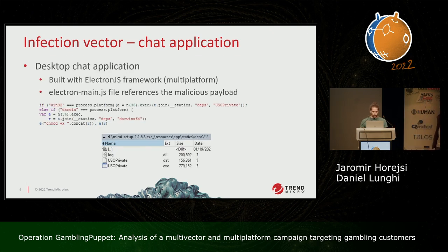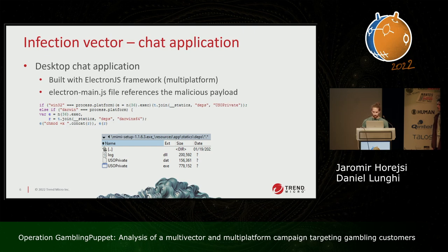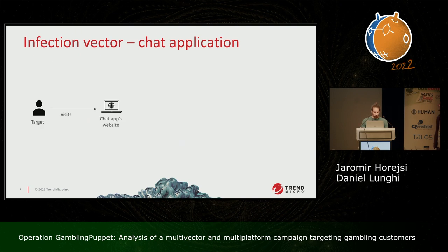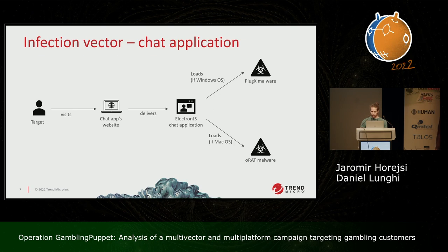There is one file that references the malicious payload, the electronmain.js file. Depending on the platform, it will run either the USO private executable in the devs folder, or if it's Darwin — meaning macOS — it will run DarwinX64. You can see the content of the devs folder on Windows platform: the usual way of loading PlugX — a legitimate executable that loads through DLL side-loading a malicious DLL that decrypts the payload, which is the third file. So the target visits the chat application website, downloads the installer, and depending on the platform, it will run either PlugX or the ORAT malware family on macOS, which we will see later.